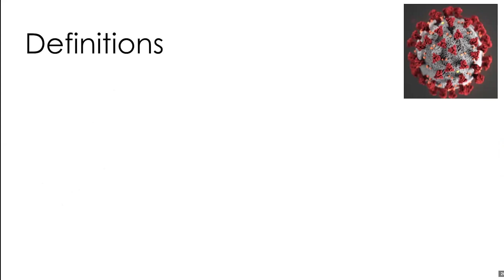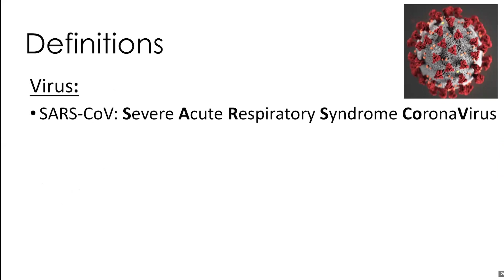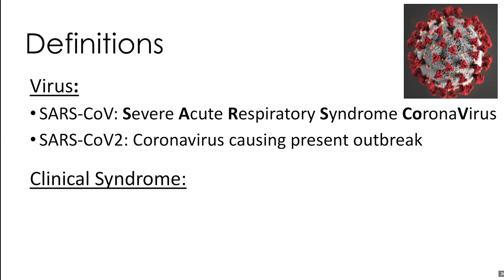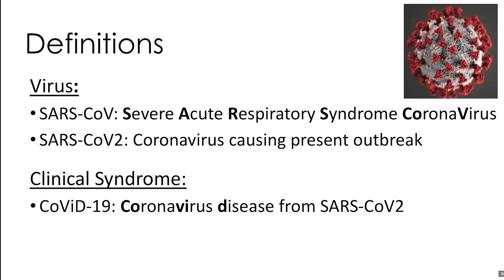Before we get started into talking about this disease, we need to go over a couple of important definitions. The virus that we're dealing with is SARS-CoV-2. The original SARS virus was SARS-CoV, which stands for Severe Acute Respiratory Syndrome Coronavirus. The present virus, SARS-CoV-2, is very similar, although not identical to the original SARS virus. When we're talking about the disease, we're talking about COVID-19, which is coronavirus disease due to SARS-CoV-2.